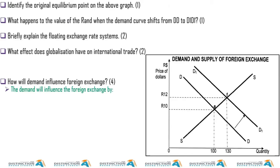Let's see the first one here: study the graph below and answer the questions that follow. Let's see what's going on — initially we have demand and supply, and this is our point of equilibrium. Then we see a shift of the demand curve to the right.